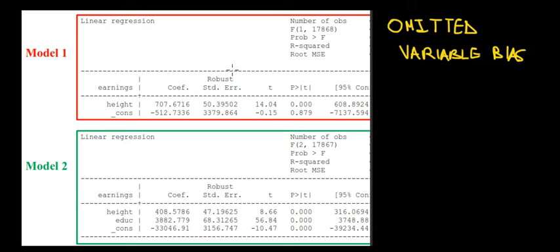Notice we have two models here. In the first model, we're regressing earnings—how much people make in money—based on their height. Apparently that's a significant determinant, and the effect is given by the slope coefficient, which is 707.67. Let's suppose height is measured in centimeters and earnings in dollars.